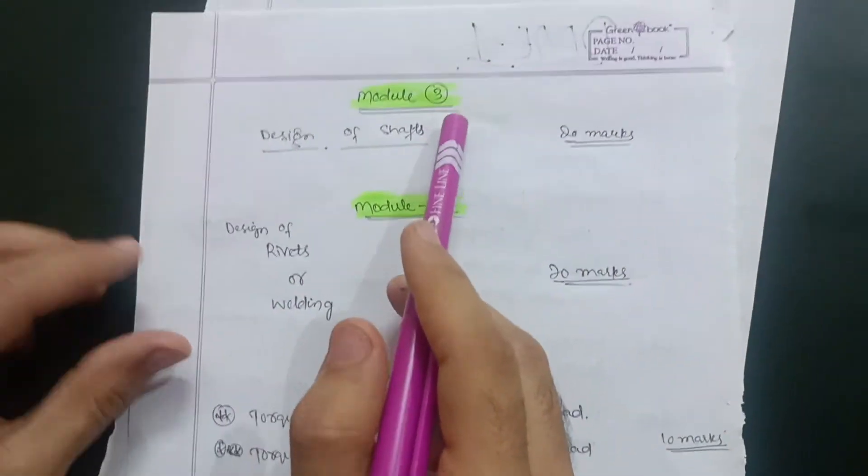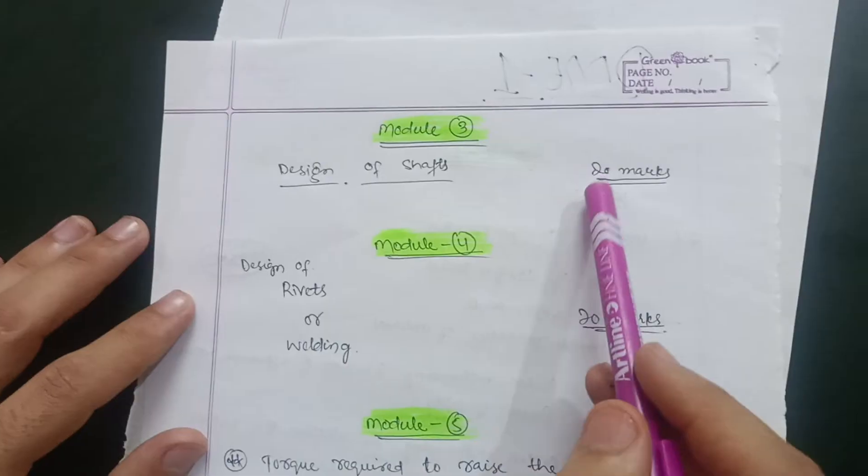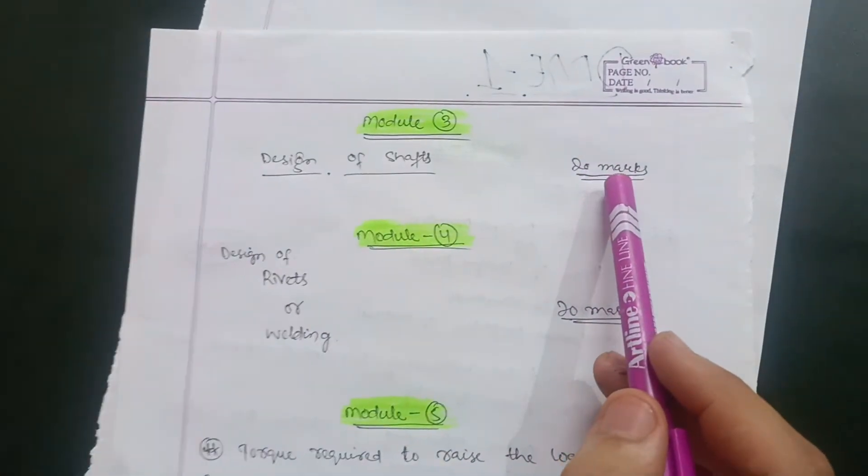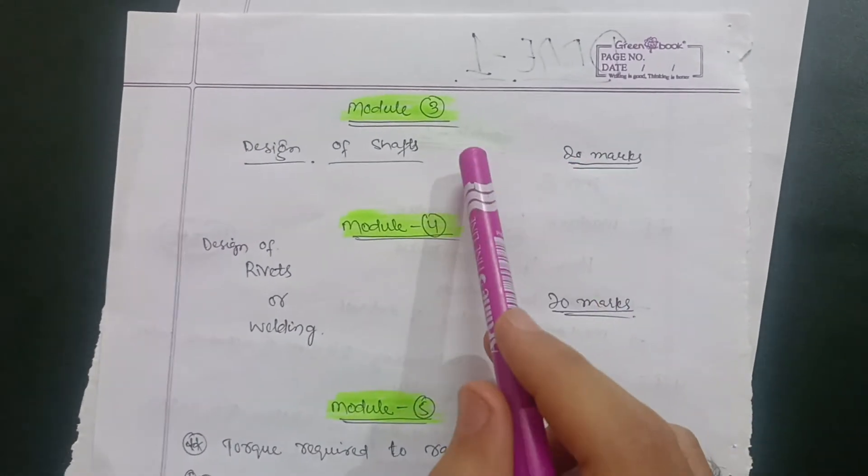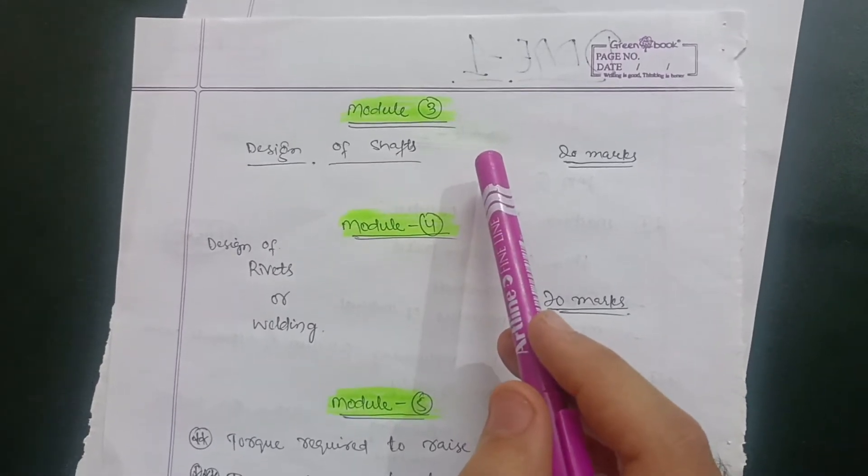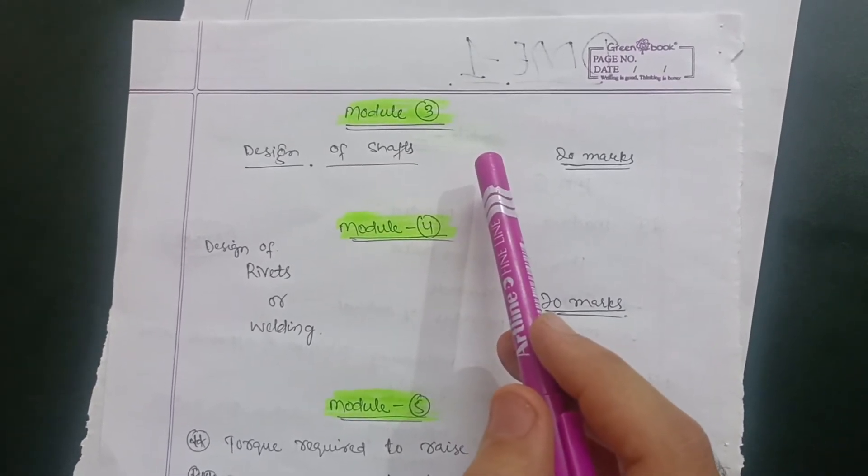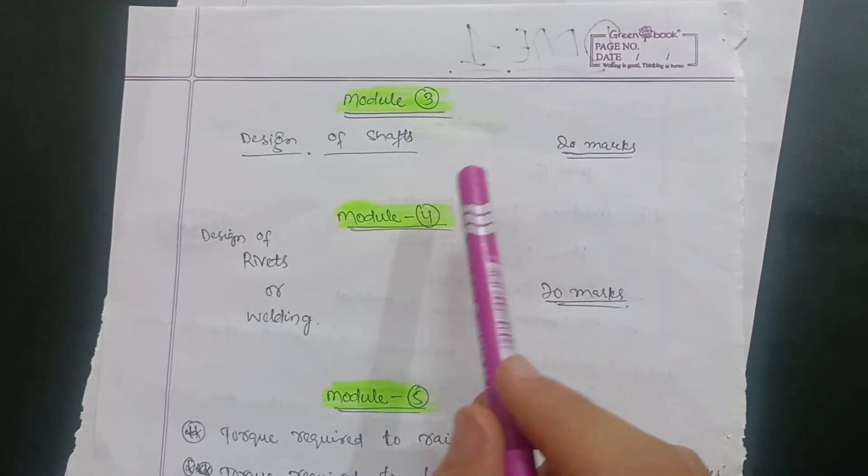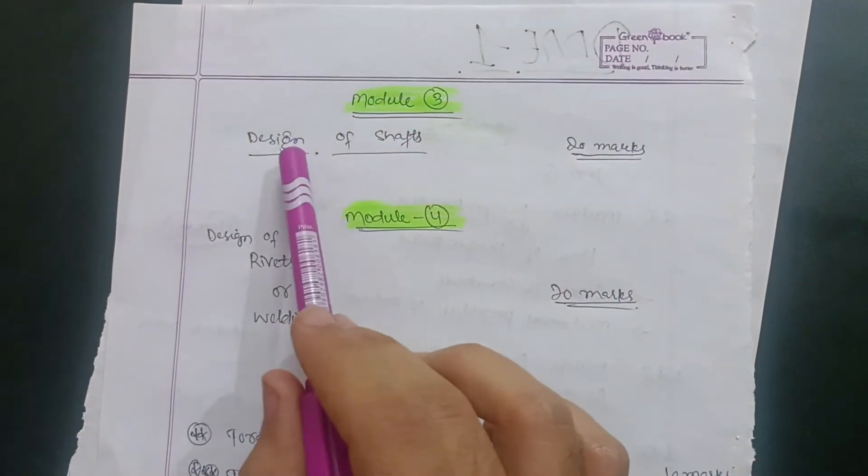In module third, there is the design of shafts. It carries 20 marks. You need to memorize, recap the moment of concepts - bending moment diagram, vertical load diagram like that. Only that concept is applicable in the design of shafts.